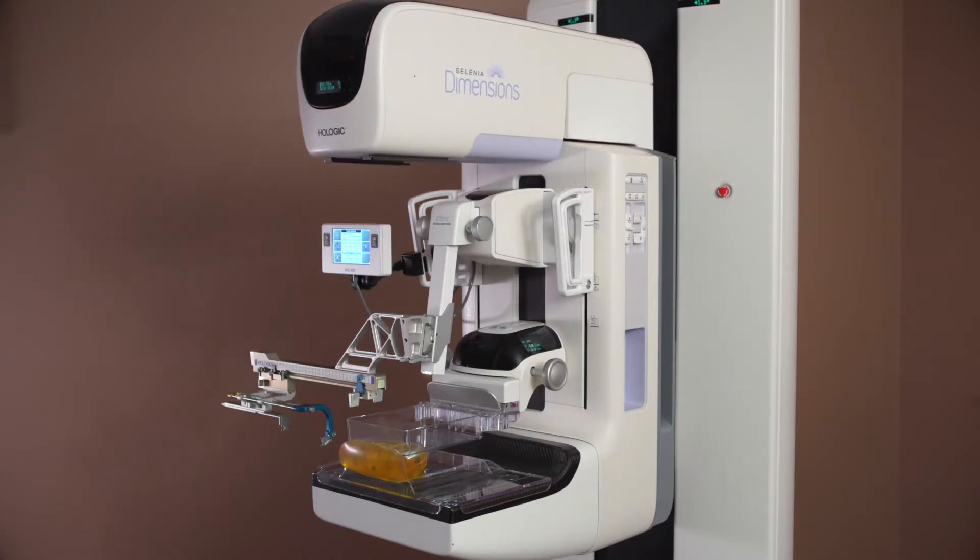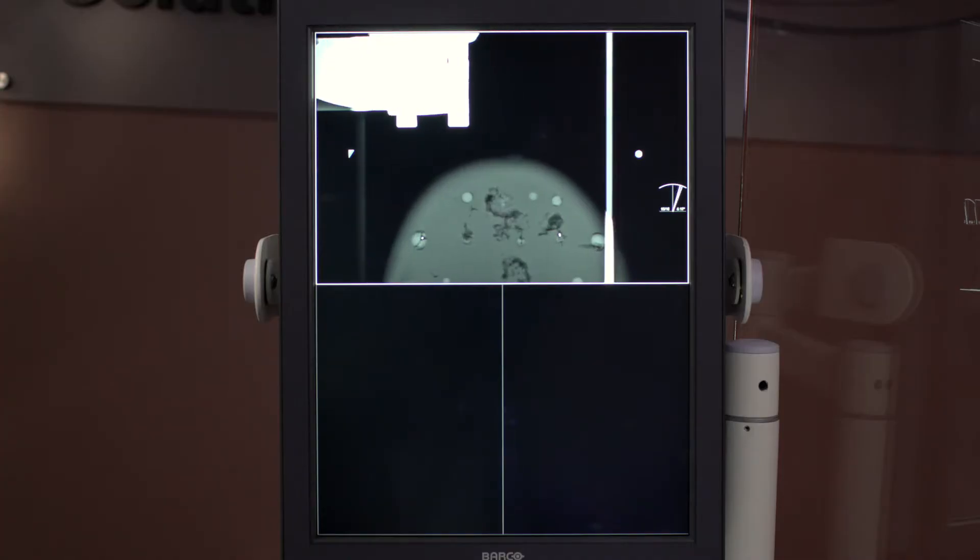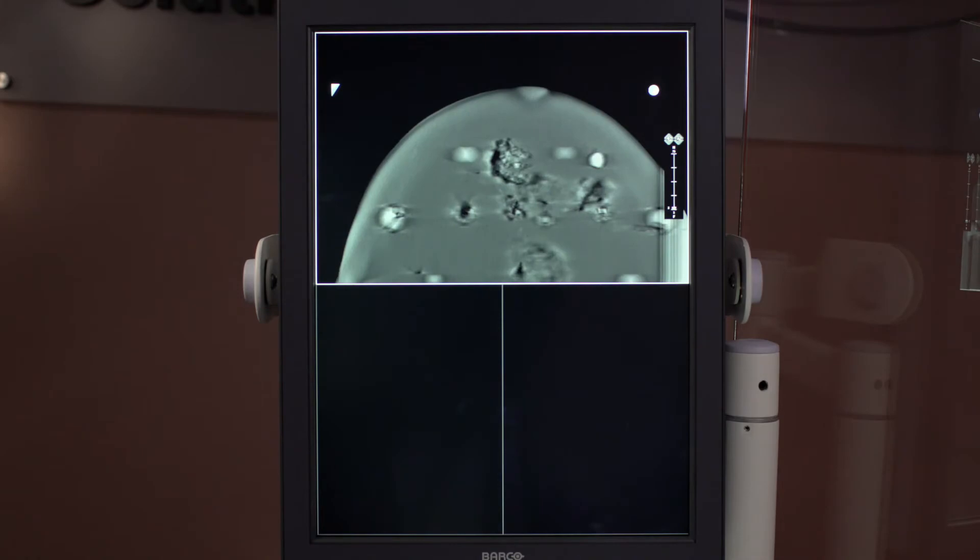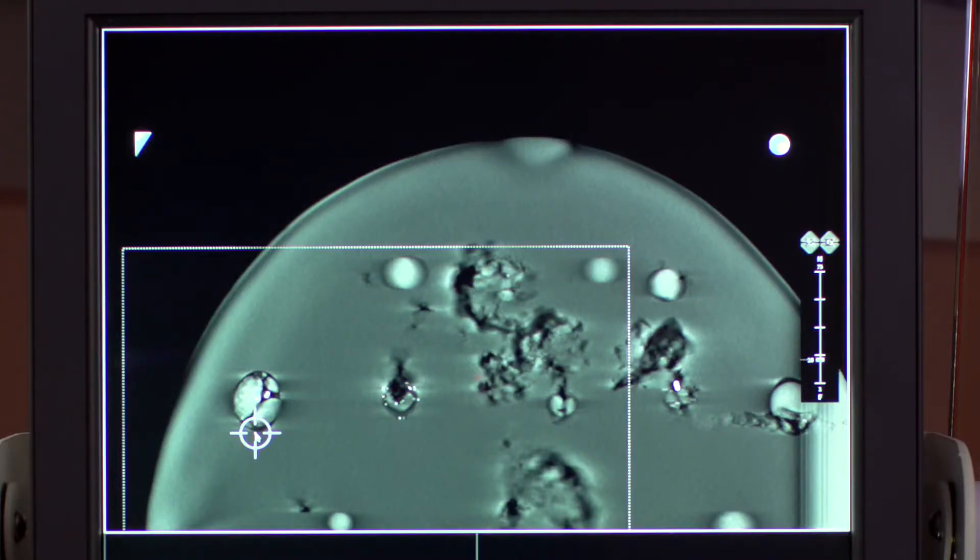After the patient is positioned, a TomoScout image is acquired. Scroll through the images to locate the lesion and target with a single click of the mouse. The TomoScout contains all the information needed to target in three-dimensional space.